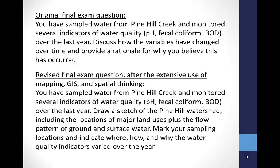Here's that same question posed to students after they've studied the same earth science content, but through a geographic lens of mapping and spatial thinking: You've sampled water from Pine Hill Creek and monitored several indicators of water quality — pH, fecal coliform, BOD — over the last year. Draw a sketch of the Pine Hill watershed, including the locations of major land uses, plus the flow pattern of ground and surface water. Mark your sampling locations and indicate where, how, and why the water quality indicators varied over the year. Note the practices here: sketching, identifying patterns, observing locations. Which version do you think would leave a student with a broader, more holistic understanding of the watershed they were studying?